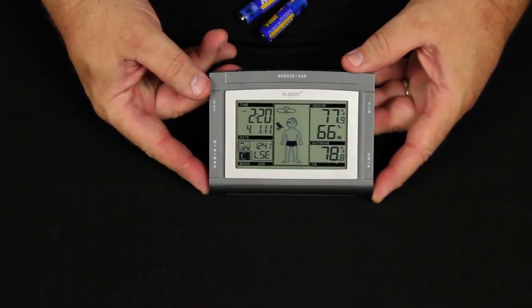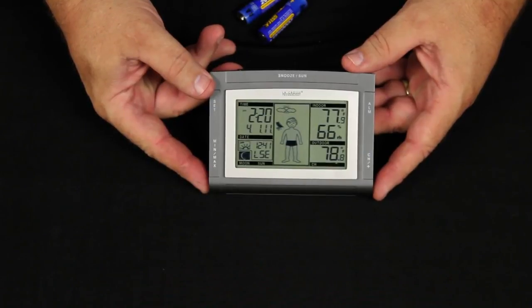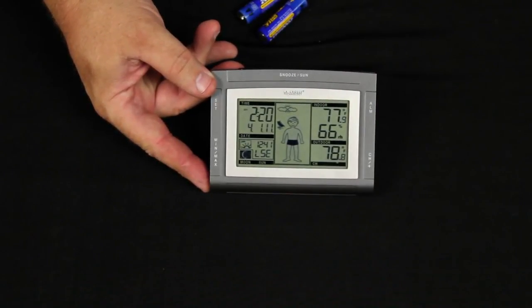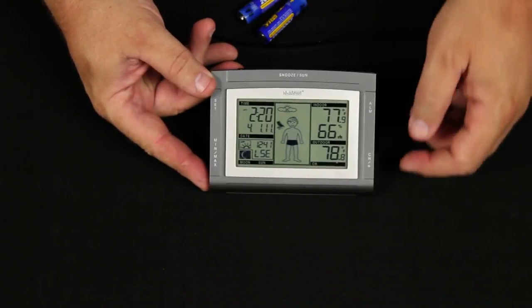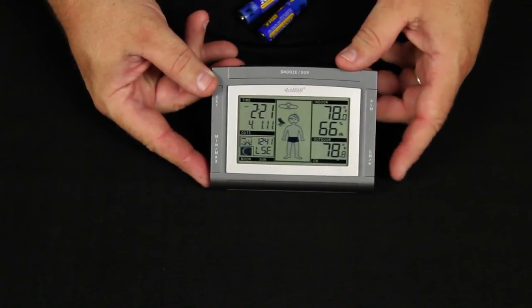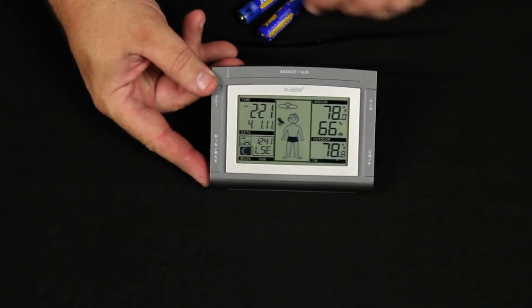One of the nice aspects of this particular weather station is it will handle up to three of the remote outdoor sensors. And when you have that, it'll show in the little channel bar here, the number of sensors, and you would change them simply by pressing the plus button.